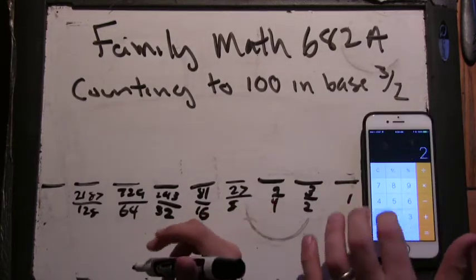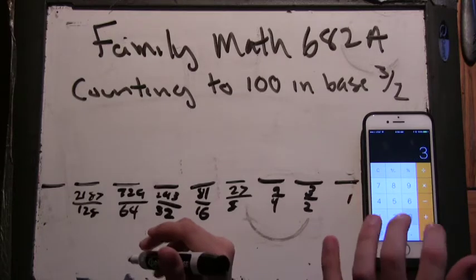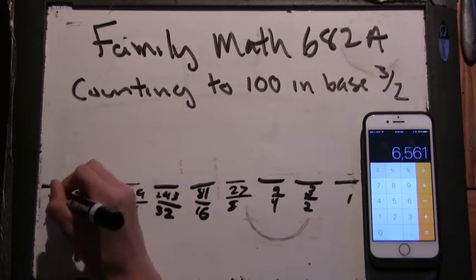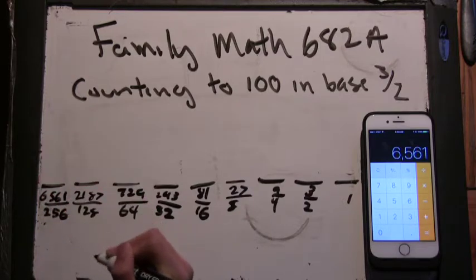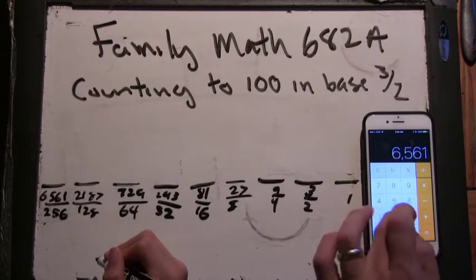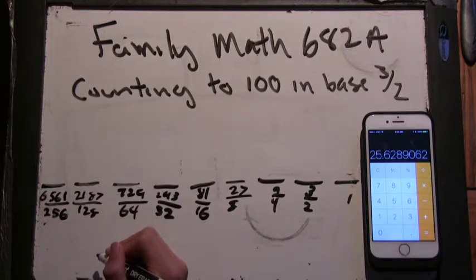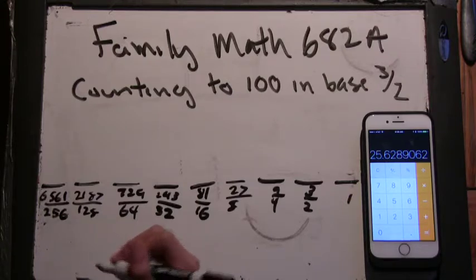The next one is 2187 times 3, 6561 over 256. 25. Alright, so it's getting there.